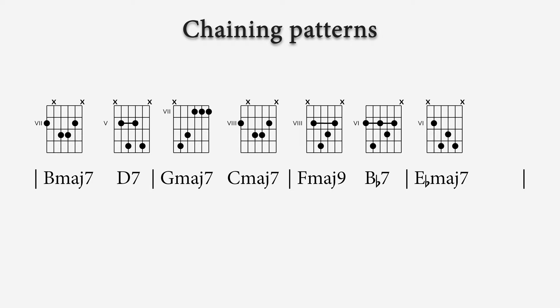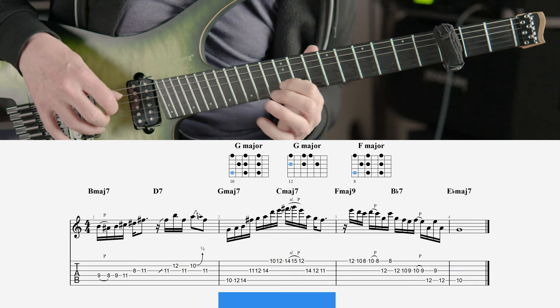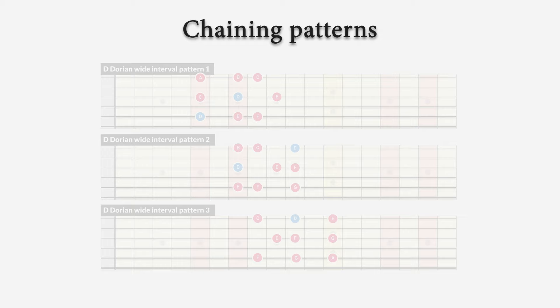It consists of the B major 7 chord, then a D7 chord as a secondary dominant for G major 7, then a C major 7 chord which goes to F, and this ends in a B flat dominant 7 chord that resolves to the tonic E flat. The second example has three patterns chained together over a D Dorian vamp formed by the D minor 7 and G dominant 7 chord.